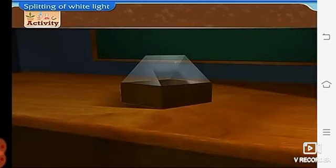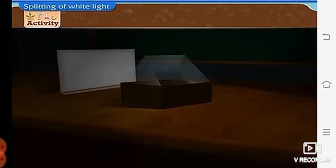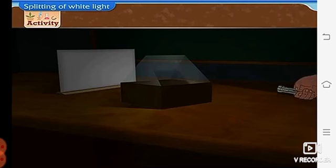Now, take a prism and place it in a dark room. On the one side, place a white screen. Now, take a torch on the other side and pass its light through the prism.